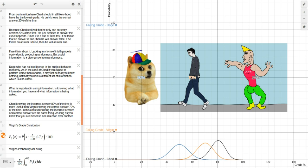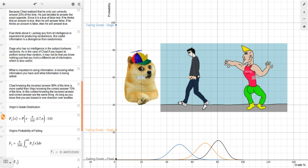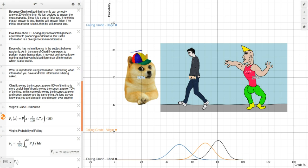Because of this, plus of the inversion technique, Chad's grade distribution is shifted to be centered on 80%, and thus his probability of failing is extremely low. Virgin has a 20% chance of failing, but Chad has a near 0% chance of failing.